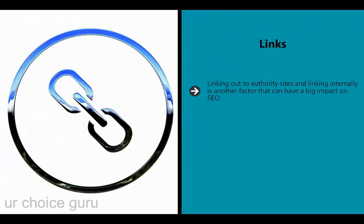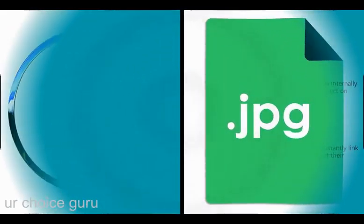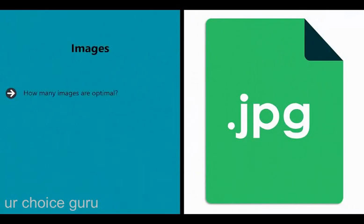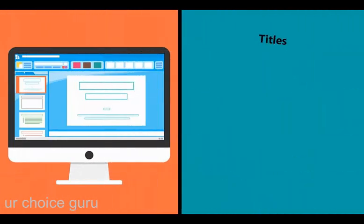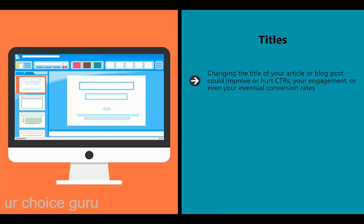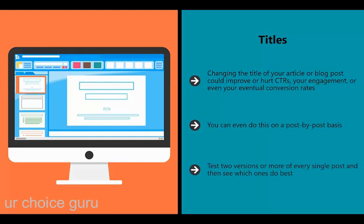Links: linking out to authority sites and linking internally is another factor that can have a big impact on SEO. A lot of SEOs will tell clients to constantly link internally, but is this really a good use of their time? Images: how many images are optimal? Does it hurt engagement to place a large image right at the top of the page? How does Google react to that? Do JPEGs perform better than PNGs? Unless image format preferences are based on data, it's just ignorance. Titles: changing the title of your article or blog post could improve or hurt CTRs, your engagement, or even your conversion rates. Test two versions or more of every single post and see which ones do best, then use the title that outperforms the others.